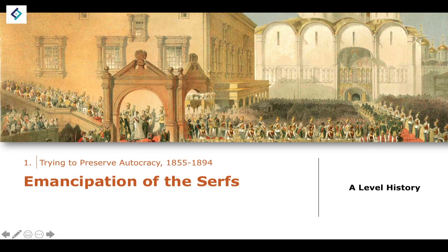In the previous lesson, we essentially introduced the state of Russia by 1855. We looked at the general history — a very quick crash course — and then we looked at some of the problems being faced by Alexander II in 1855. The first of these problems was the war in Crimea, a very costly conflict both in terms of the defeat it gave to the Russian Empire and the economic collapse that was on the brink. We also talked about the emancipation of the serfs and focused on the motivations for emancipation — why it was becoming an increasingly popular ideal.